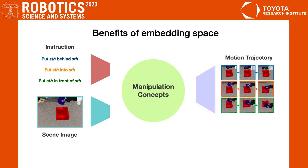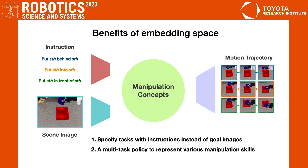Constructing an embedding space of manipulation concepts offers several benefits. First, we can specify the manipulation task with language instructions instead of goal images — describing the task with language is much simpler than providing a goal image. Second, we can obtain a multi-task policy to represent diverse manipulation skills, such as 'open something' or 'close something.' Third, by training on a diverse set of manipulation tasks, our policy can also generalize to novel and similar instructions.